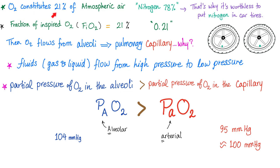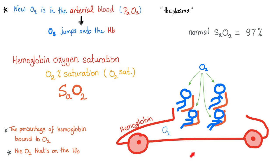Let's review. Oxygen is about 21% of atmospheric air, so 0.21. It goes to your alveoli — that was the 105 mmHg. How does it go from the alveoli to the arterial blood? The pressure in your alveoli must be higher than the pressure in your artery, because fluids and gases flow from high to low pressure — 105 to 100. This is your hemoglobin taxi car with four seats, each for one oxygen molecule. When oxygen is free in the blood, it's called PaO₂. Once oxygen enters the taxi, it's called SaO₂.